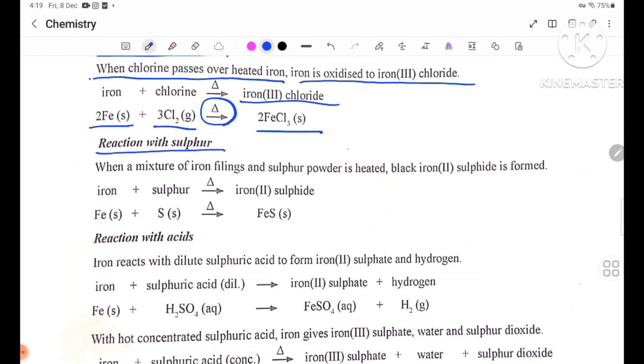Reaction with sulfur. When a mixture of iron filings and sulfur powder is heated, black iron(II) sulfide is formed.